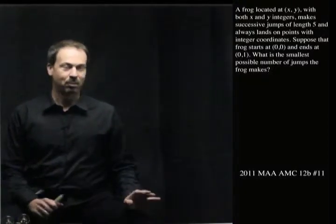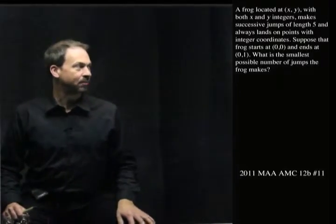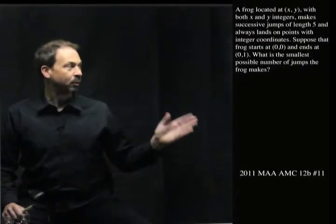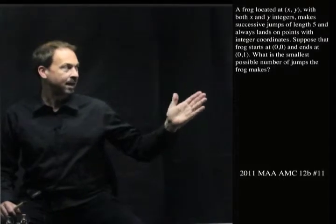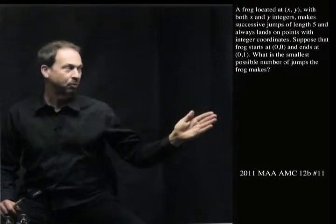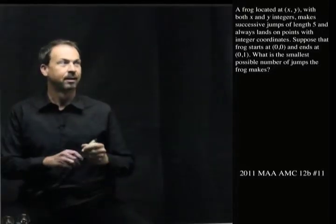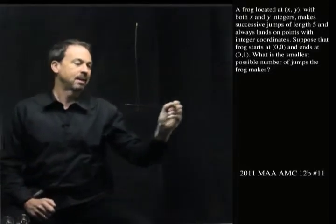All right, so I'm going to think my way through this. I feel like this question is within reach. I've just got to make sense of it now. So it's basically saying when a frog is at an integer coordinate point xy, it's going to land on other integer coordinate points by jumping lengths 5. So let me actually draw a picture which seems like a natural thing here.